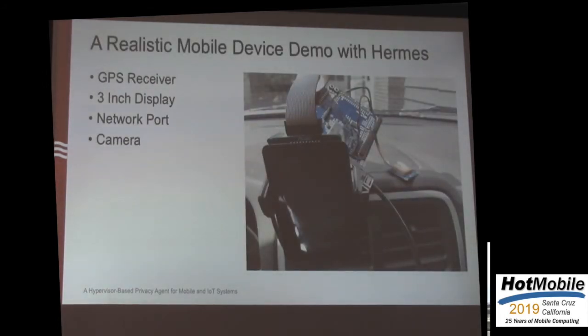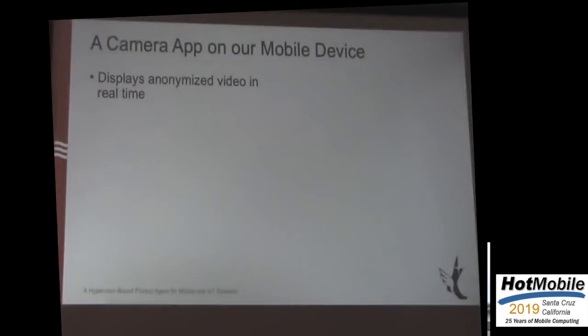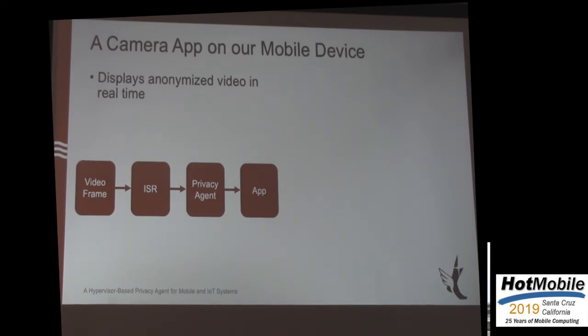To test whether we can run all this software on a mobile device in real time, we developed this mobile device demo platform — kind of an ugly-looking board, but it has all the features you might find on a mobile platform: a camera, a screen, and so on. We wrote some apps for it, including a camera app that points at something and shows the image on the screen. What we're going to do is try to anonymize that camera data first and see what the computational overhead of doing that is.